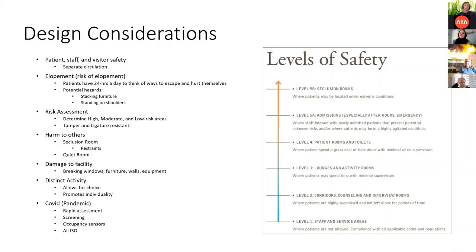When starting, you must determine high, moderate, and low risk areas. Low risk areas are where patients are simply not allowed. Moderate areas are where patients are highly supervised most of the time — lounges, activity rooms, corridors, and interview rooms. High risk areas are either where patients are under extreme conditions such as seclusion rooms, or areas where patients spend large amounts of time unsupervised, such as patient rooms and toilets. In high and moderate risk areas, everything must be tamper and ligature resistant, so there is no point of risk allowing patients to harm themselves.